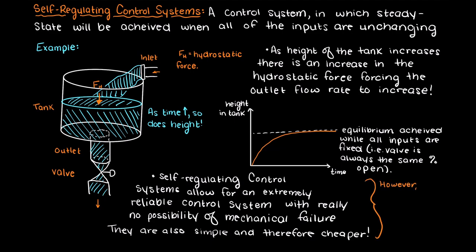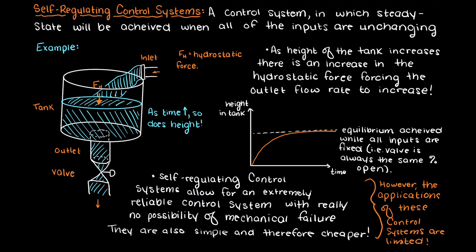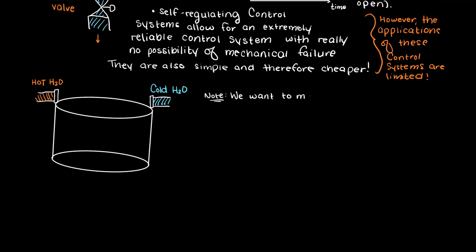Although amazing for some simple and specific applications, self-regulating control systems do not really work for systems with any amount of complexity. So let's imagine that we had a tank with two input streams, one with hot water and one with cold water. Let's say that we want to maintain a constant temperature.